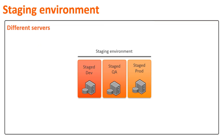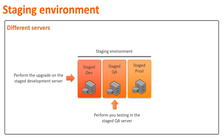Typically, a staging environment is comprised of a staging development server, staging QA server, and the staging production server. You must perform your upgrade on the staging development server while conducting the testing on the staging QA server. Finally, you must go live with your staging production server. You must plan for each of these while preparing your upgrade strategy.